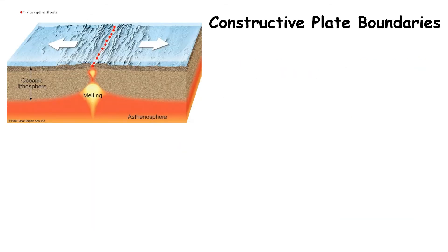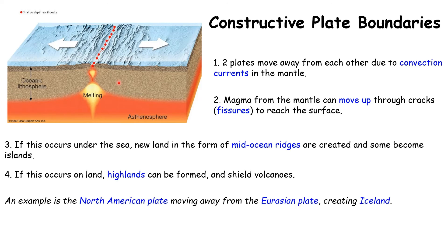At a constructive plate boundary, two plates move away from each other. As they separate, cracks or fissures open up and molten rock finds its way to the surface, producing shield volcanoes with runny lava. Smaller earthquakes occur as the rock tears apart and magma rises to the surface. One example is the North American plate moving away from the Eurasian plate, which created Iceland and the famous volcano that erupted fairly recently.